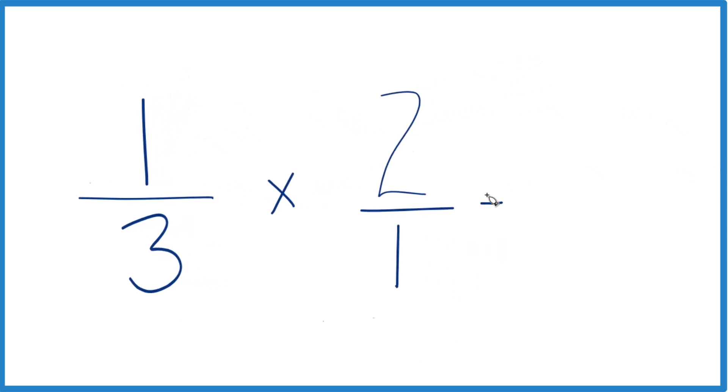The numerator is one times two, that equals two, and then the denominator, three times one, that equals three. So we just multiply the numerators, then the denominators, and we end up with one-third times two, that equals two-thirds.